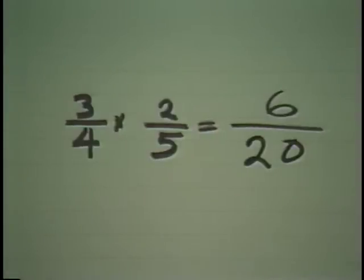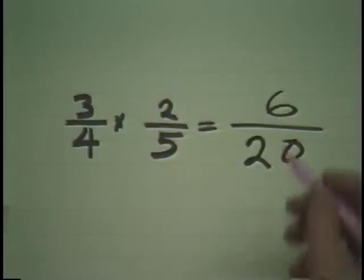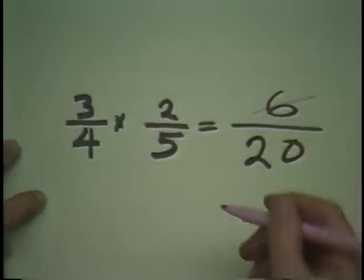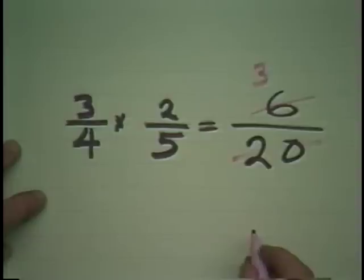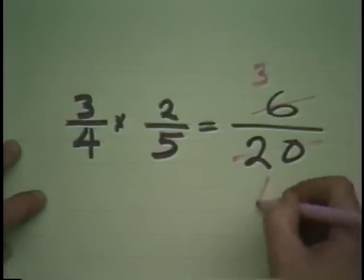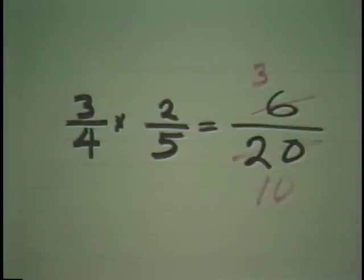And then, of course, always stop to see if it's reducible. In this case, 2 will go into there 3 times and 2 will go into here 10 times. So my answer, 3 tenths.